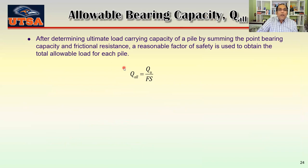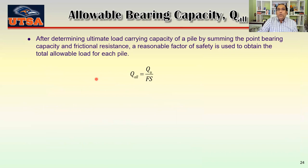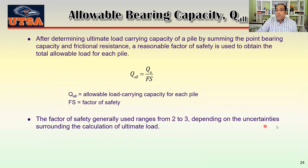We don't want to apply the ultimate load to our pile, so we use a factor of safety. The allowable load Q_allowable = Q_ultimate / FS. The factor of safety generally ranges from 2 to 3 depending on the uncertainties in the calculation. If the soil deposits are very uniform, a factor of safety of 2 would be enough. But if the subsurface soil properties are changing significantly from location to location, it is better to use a higher factor of safety of 3.